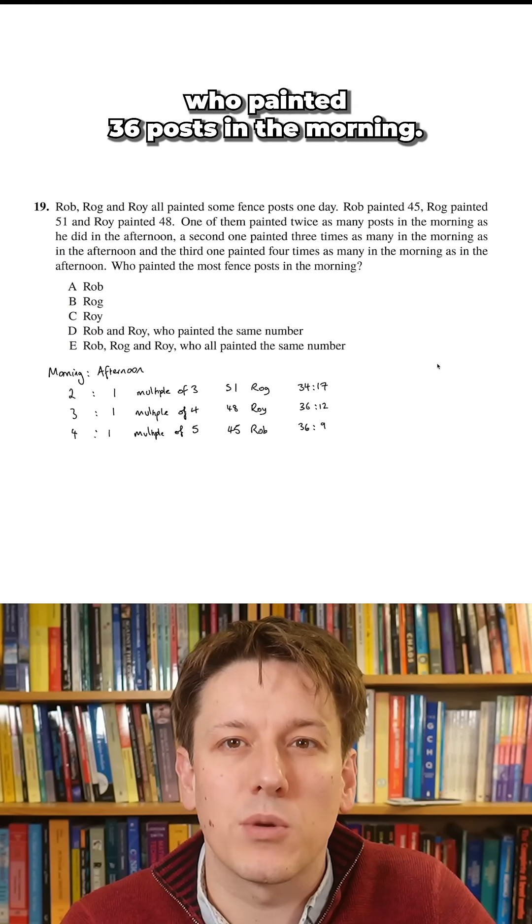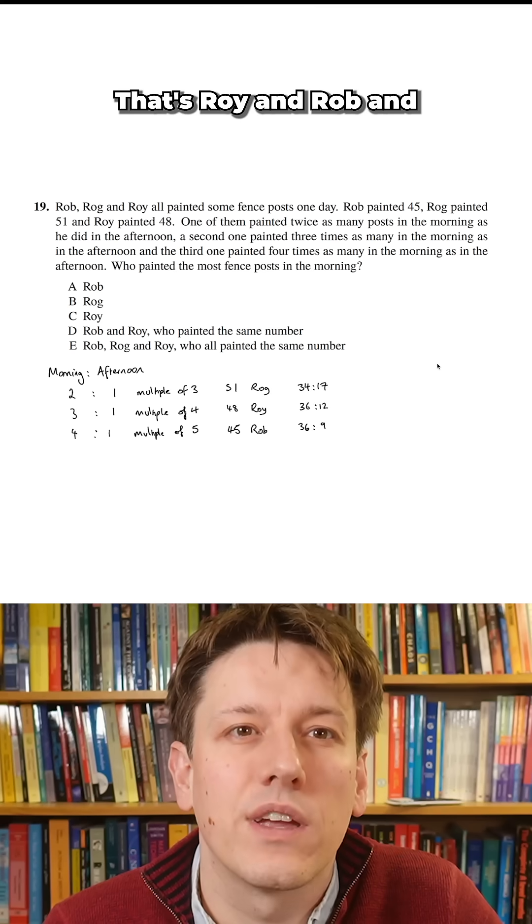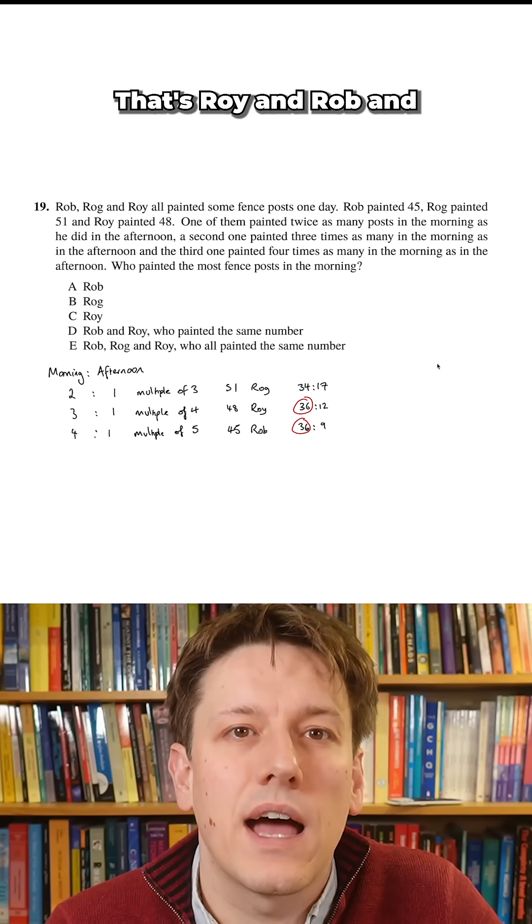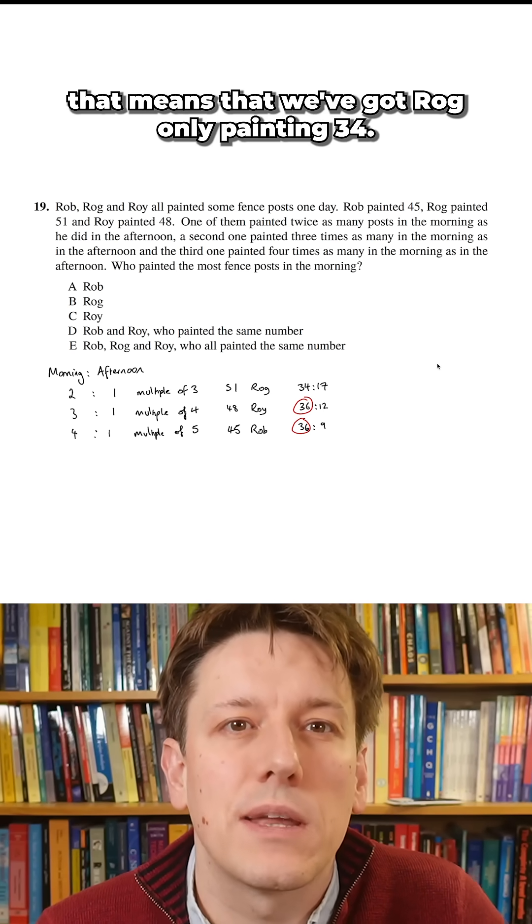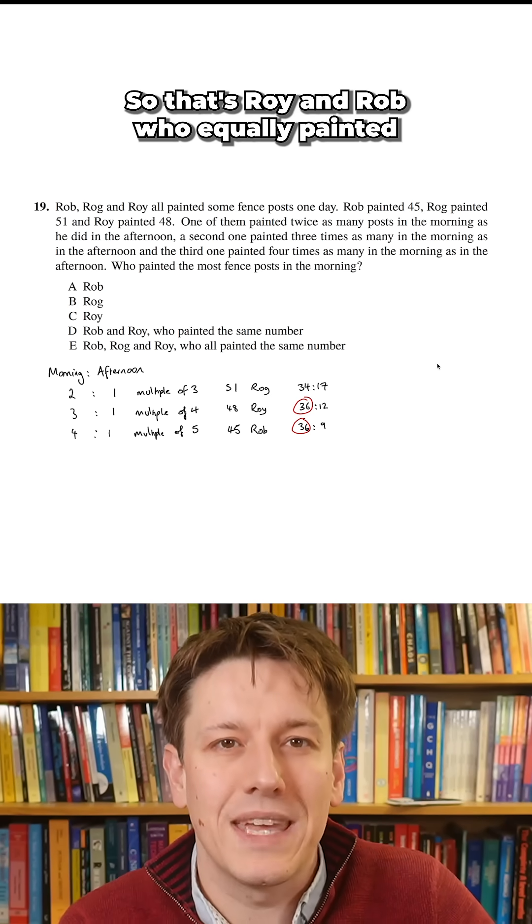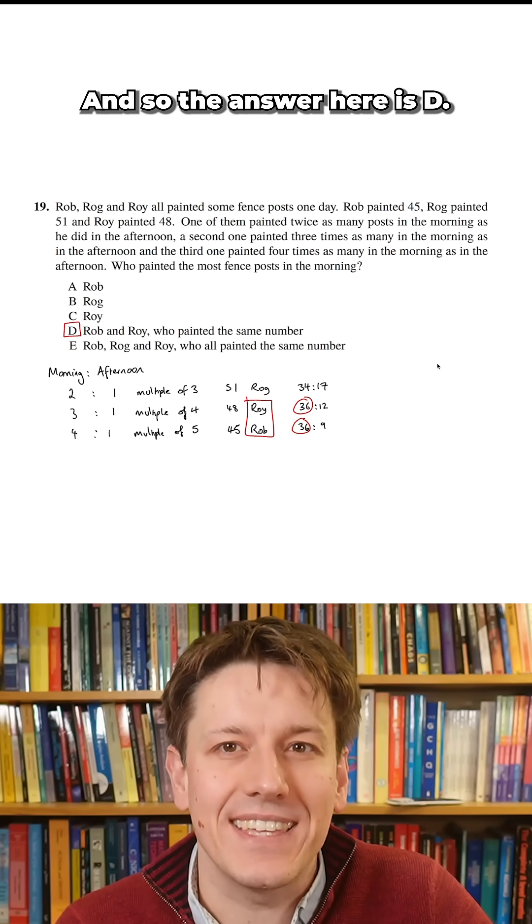So we can actually see there are two people who painted 36 posts in the morning, that's Roy and Rob, and that means that we've got Rog only painting 34. So it's Roy and Rob who equally painted the most fence posts in the morning and so the answer here is D.